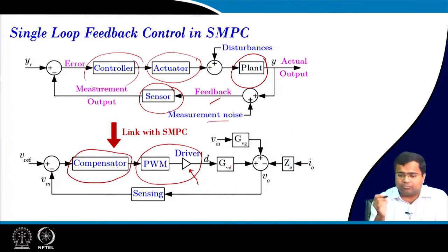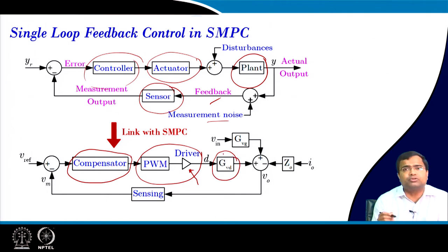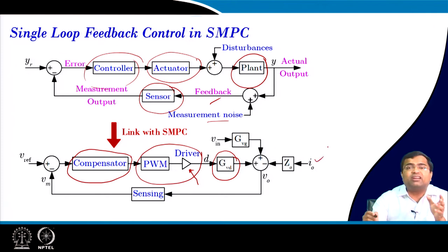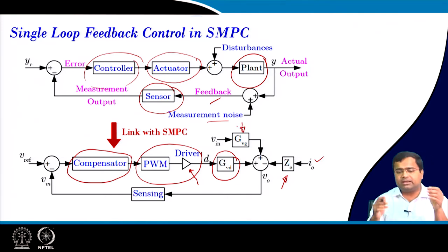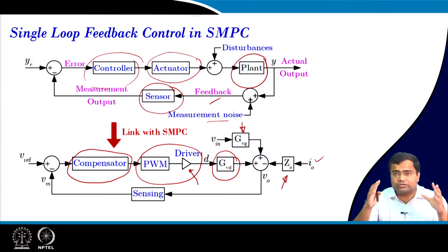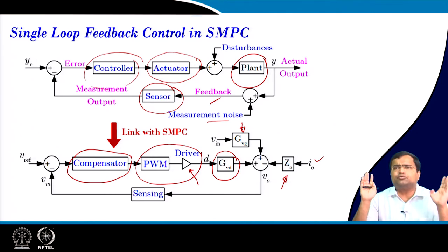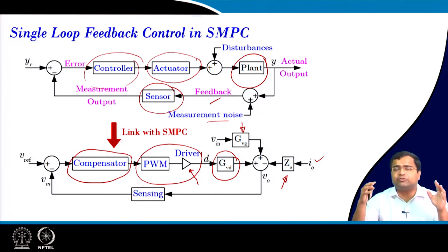If we model using a small signal model, there will be a control-to-output transfer function. You need to control the output voltage, and there can be load current variation, so you need to assess the output impedance. There can also be supply variation, so you need to know the open loop audio susceptibility and the control objective to make the output voltage more or less insensitive to supply disturbance, or to meet certain load transient requirements in terms of overshoot and undershoot.